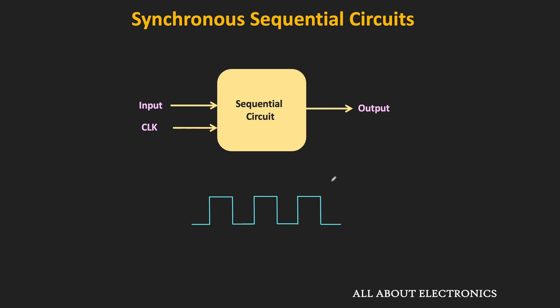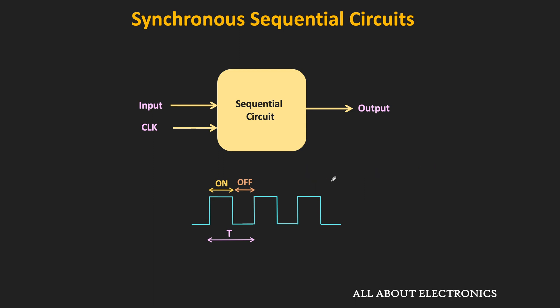The first term is time period — the time after which the clock signal repeats itself. The time for which the clock signal is high is the on time, and the time for which it remains low is the off time. For a given time period, the clock signal can have different on times and off times, defined by the duty cycle, which is the ratio of on time to total time period.